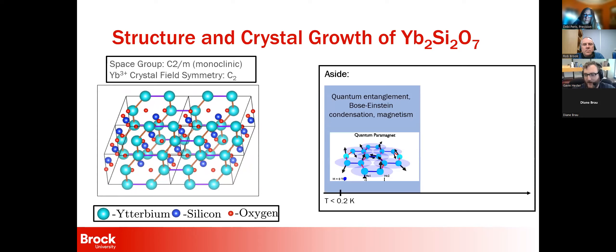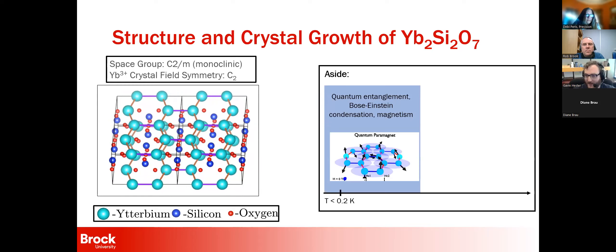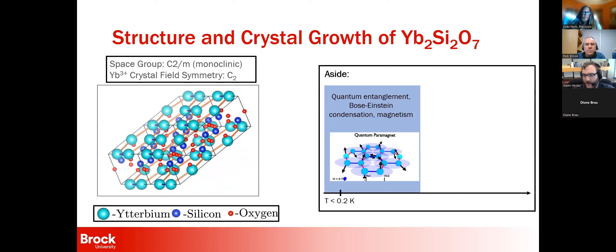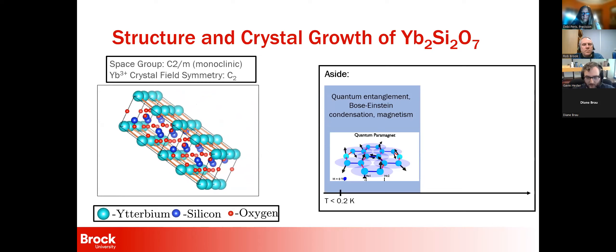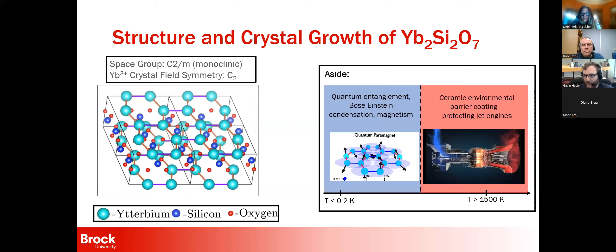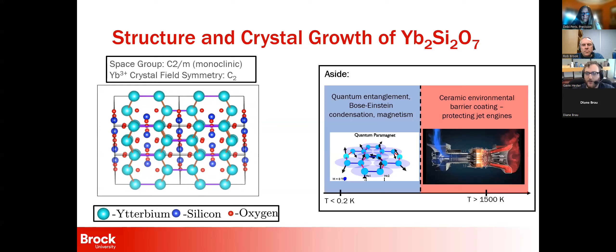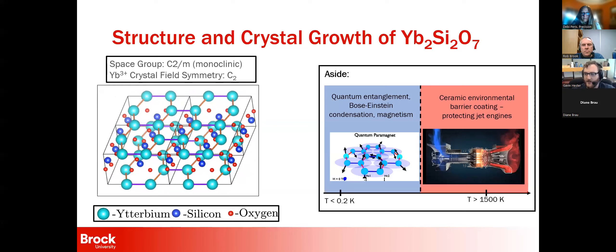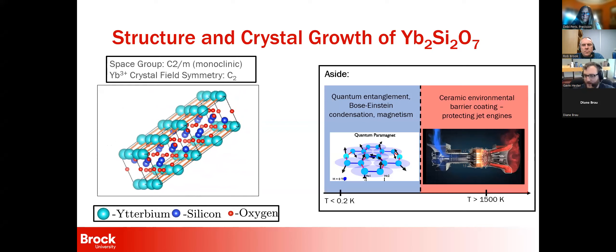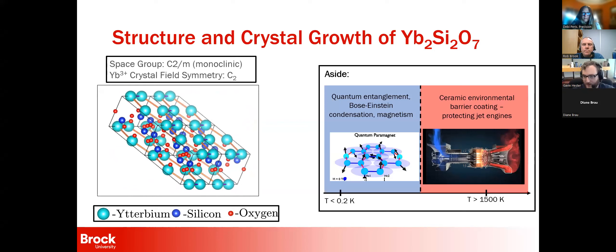There's a slight aside I like to make here. All of what I'll be discussing in ytterbium silicate occurs at temperatures below about 200 millikelvin, where you get quantum entanglement and Bose-Einstein condensation in magnetism. But as we were working on this project in my PhD, we found the system was already famous — at temperatures in excess of about 1500 Kelvin, engineers at places like NASA use this compound to coat jet engines to protect them from hot gases and water vapor. It's a good instance of a material being interesting in a completely different regime.